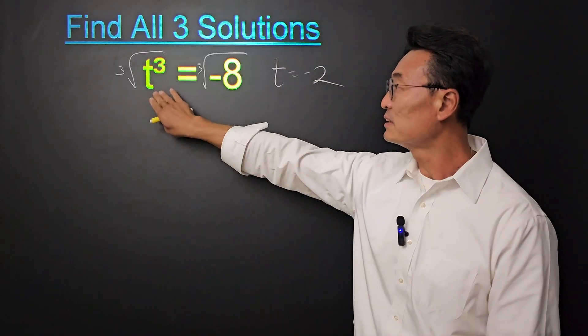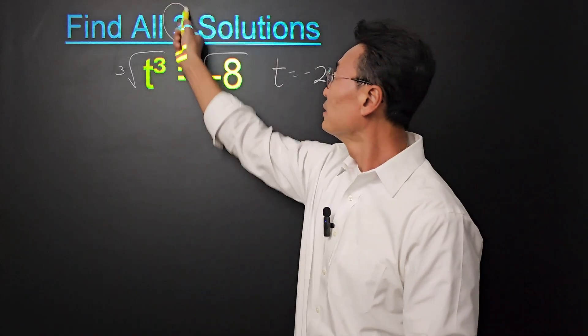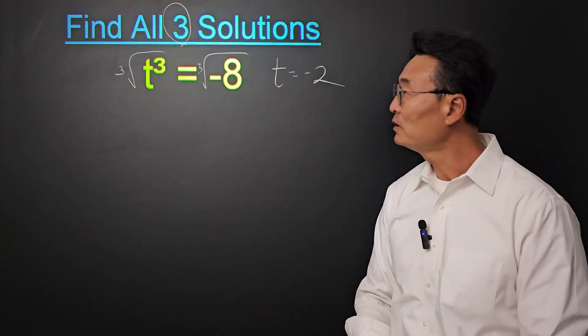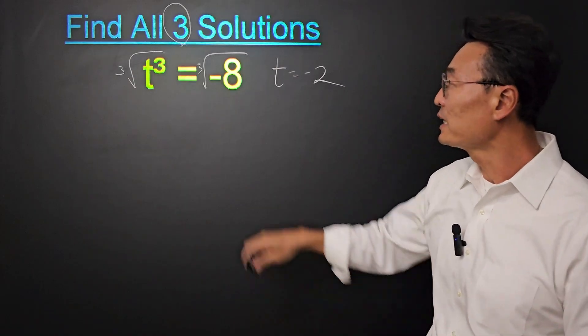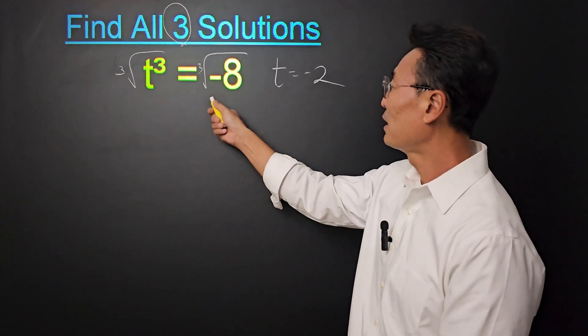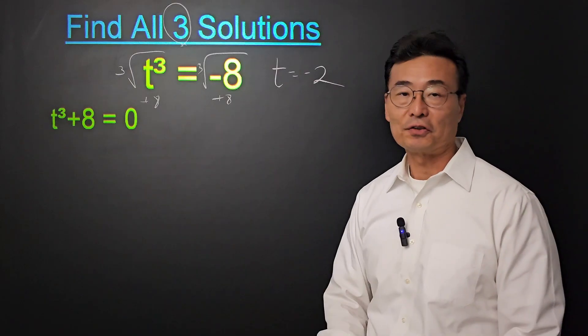However, since t is to the third power, we need to find three solutions as the direction suggests. So how do we find the other two? We want to bring that negative 8 to the left side of the equal sign, or we need to add 8 so that we can set the equation equal to 0.